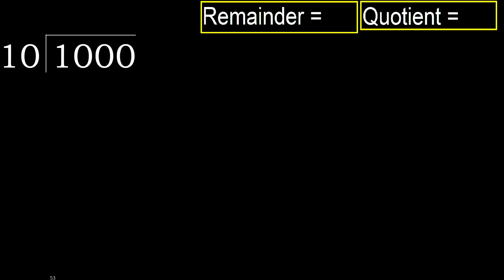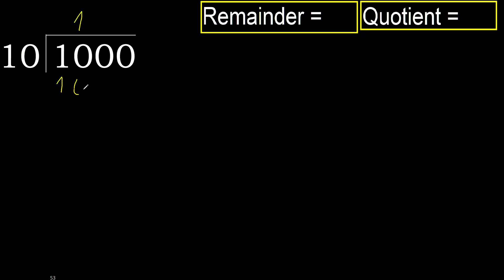1000 divided by 10. 1 is less, therefore next. 10 is not less, therefore with 10: 10 multiplied by which number is nearest to 10, but not greater? 10 multiplied by 2 is 20 — 20 is greater. Multiplied by 1 is 10. Ok, 10 is not greater. Subtract: 10 minus 10 equals 0.